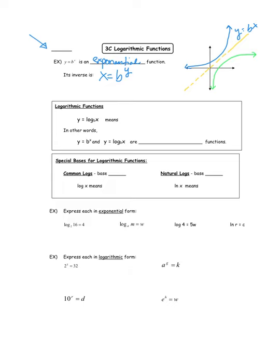Then comes the solve part: to solve x equals b to the y, we would have to somehow get y out of the exponent. Some people might say take the y root of both sides — please don't write this down, but let me show you what happens. If you take the y root of both sides you end up solving for b, not for y. So that doesn't do the trick. Instead, the way to solve for y is something called a logarithm. A logarithm is a word used to tell us we're looking to solve for an exponent.